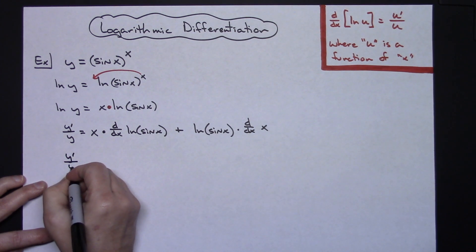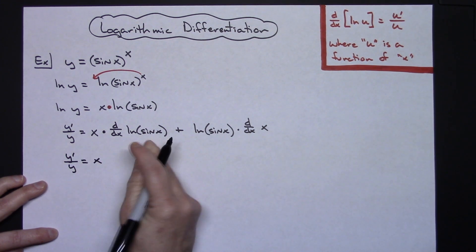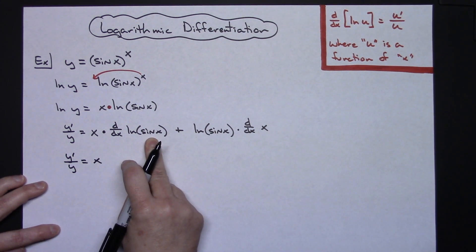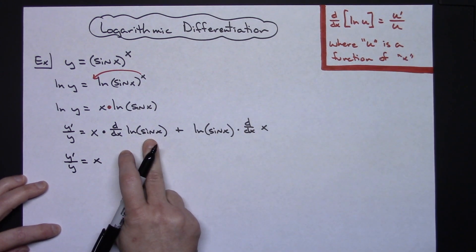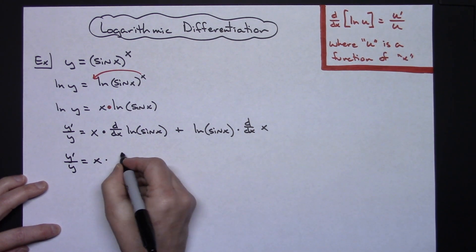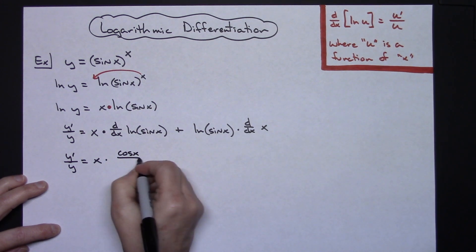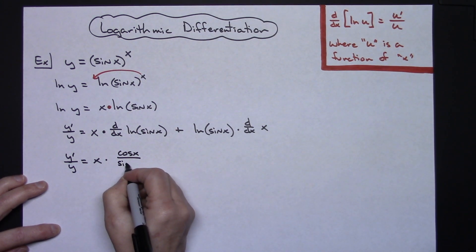I'm going to leave my y prime over y alone. Taking the derivative here, u prime over u, so the derivative of sine is going to be cosine all over the u which is sine.